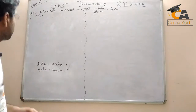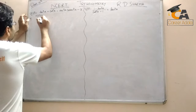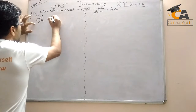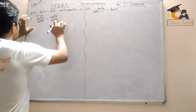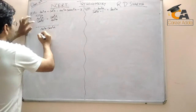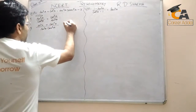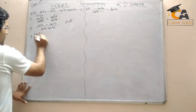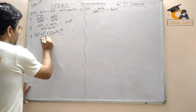What we can do is use sine and cosine. We can write sine square a divided by cos square a, and cos square a divided by sine square a. Now taking LCM, we get sine to the power 4a plus cos to the power 4a, divided by sine square a cos square a.